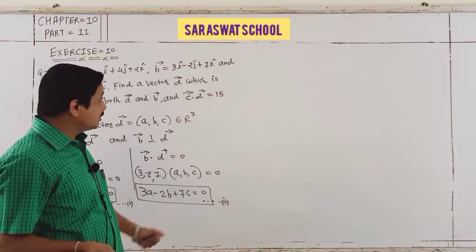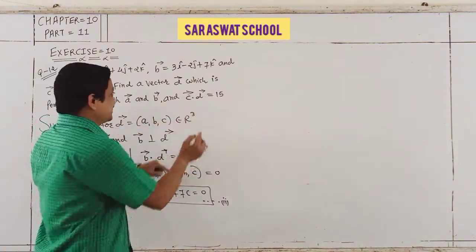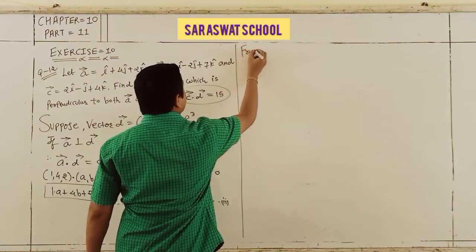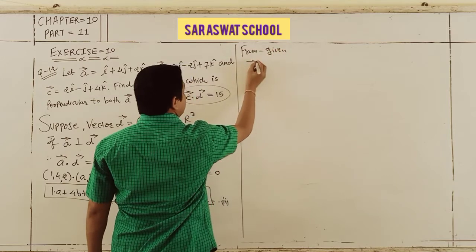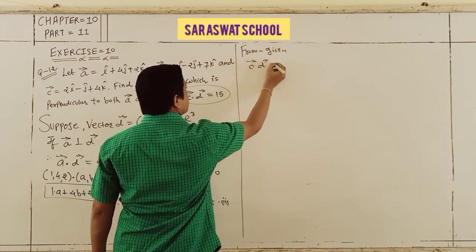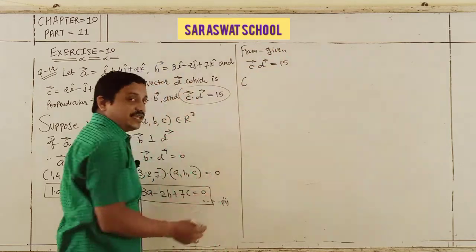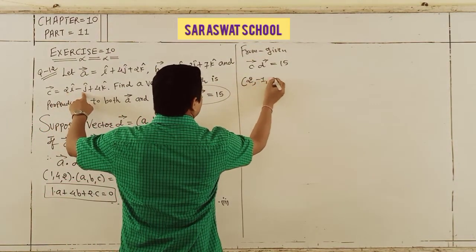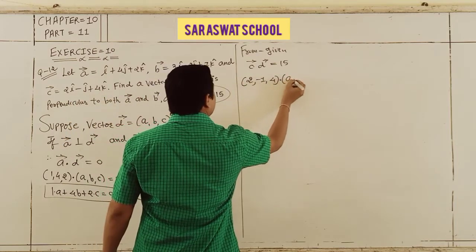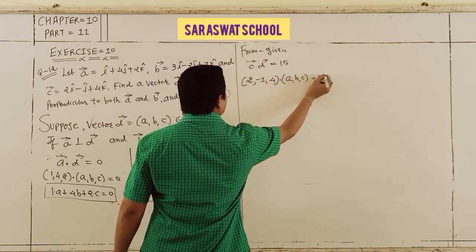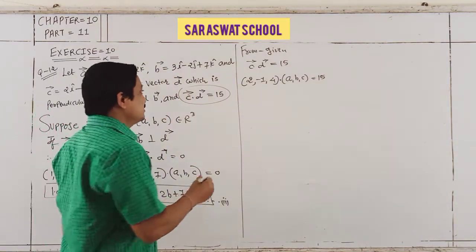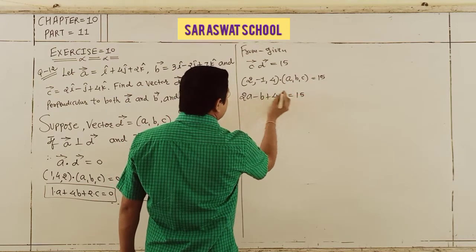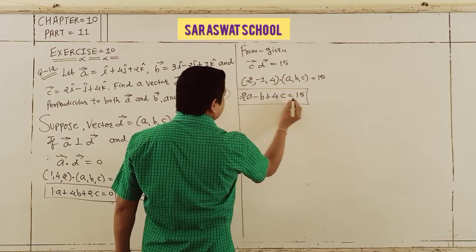Now take the third case — from the given condition, c dot d = 15. Vector c = (2, −1, 4) and d = (a, b, c). Taking the dot product: 2a − b + 4c = 15. That is equation number 3.